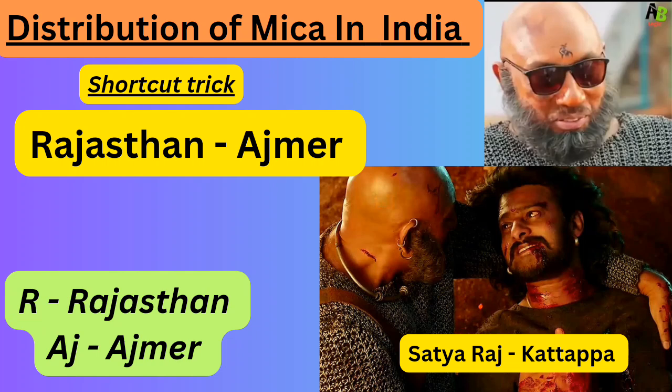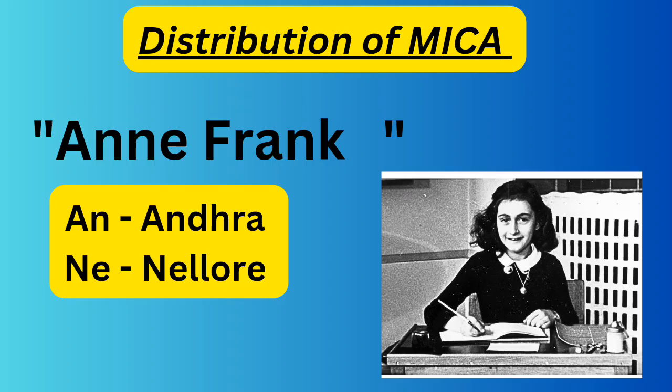The second shortcut uses the actor Satya Raj, popularly known as Katappa from the Bahubali movie. Take the word 'Raj' — R-A-J: R represents Rajasthan, and AJ represents Ajmer. So Rajasthan is the state and Ajmer is the mica mining area.